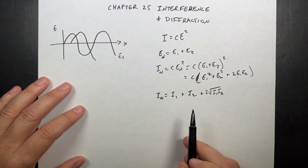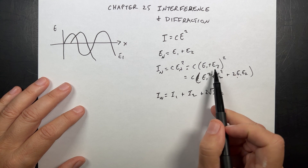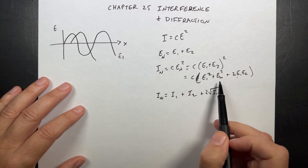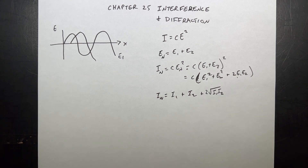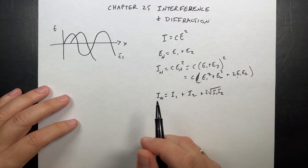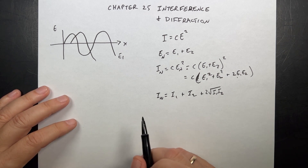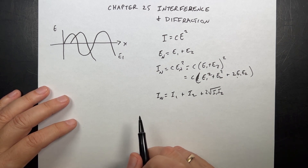If I have destructive interference, I subtract these two and I get the same thing but with a minus sign. The intensity is what we see — we don't see the electric field.